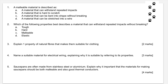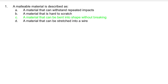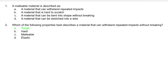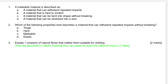The answer to question one is C — a material that can be bent into shape without breaking, just like most metals. For question two, repeated impacts means being hit several times, so things that can withstand that without breaking are tough. For question three, remember the command word is 'explain' — you need to give the property, which is absorbent, and then also give and explain the advantage, which is that they can be dyed into different colours.